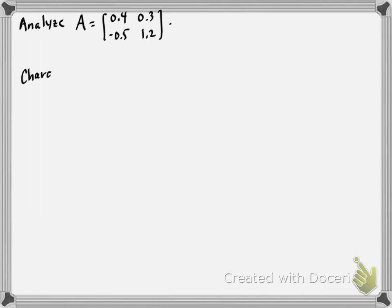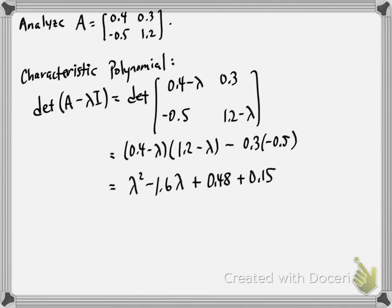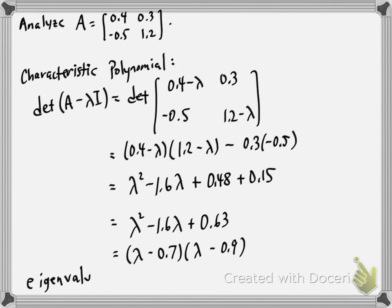We turn to eigenvalues and eigenvectors. We want to first find the eigenvalues of this matrix, and so we've got to compute its characteristic polynomial. That's the determinant of A minus lambda I. I compute the determinant and multiply everything out. Get this quadratic polynomial in lambda, and I'm interested in finding the roots of that polynomial. I can factor it either by inspection or by using the quadratic formula. It factors as lambda minus 0.7 times lambda minus 0.9, which tells me the eigenvalues of A are 0.7 and 0.9.